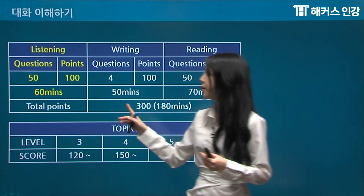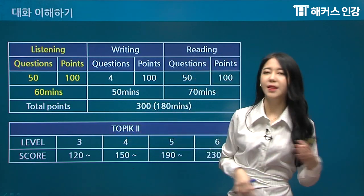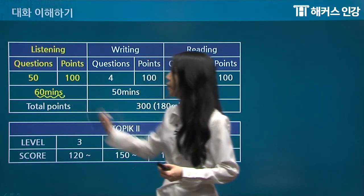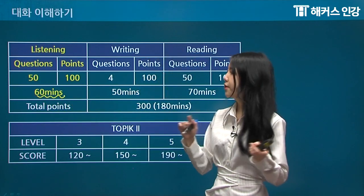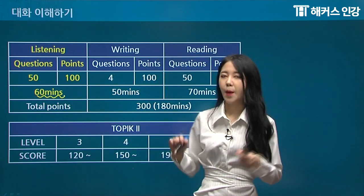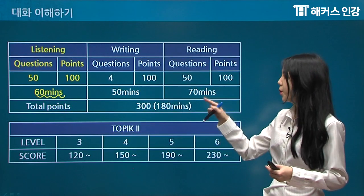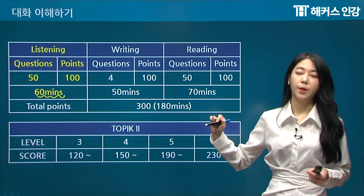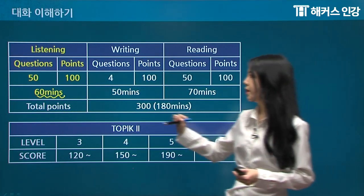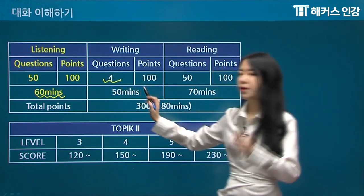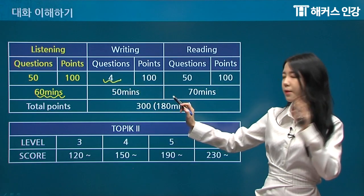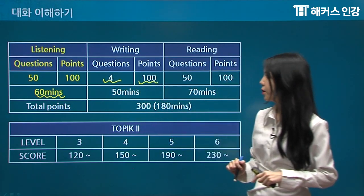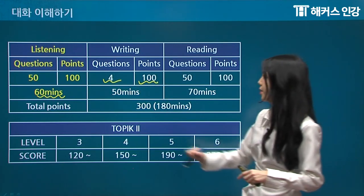For the listening section, they're going to give you a total of 60 minutes. The number of questions is 50, and the points are 100. The points are exactly the same for all three parts. For writing, they're going to give you four problems worth 100 points and 50 minutes — so this is the least amount of time.